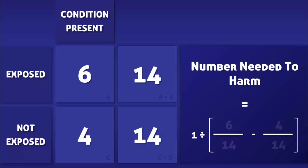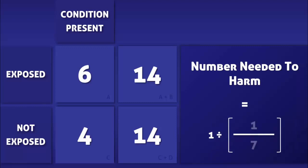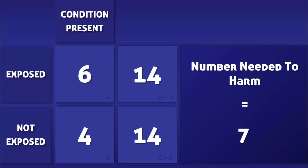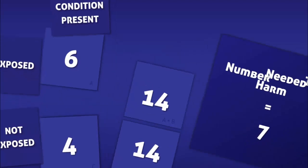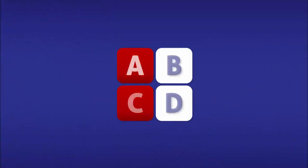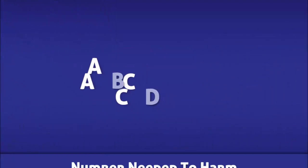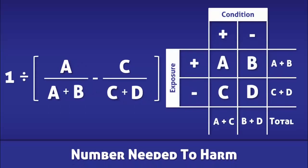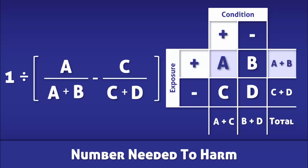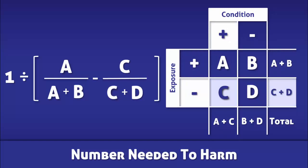By adding the correct values into the equation and doing a little bit of math, we find that the number needed to harm is 7. The number needed to harm is calculated by dividing 1 by the difference in incidence of the condition in those who are exposed to a risk factor by the incidence of the condition in those who are not.